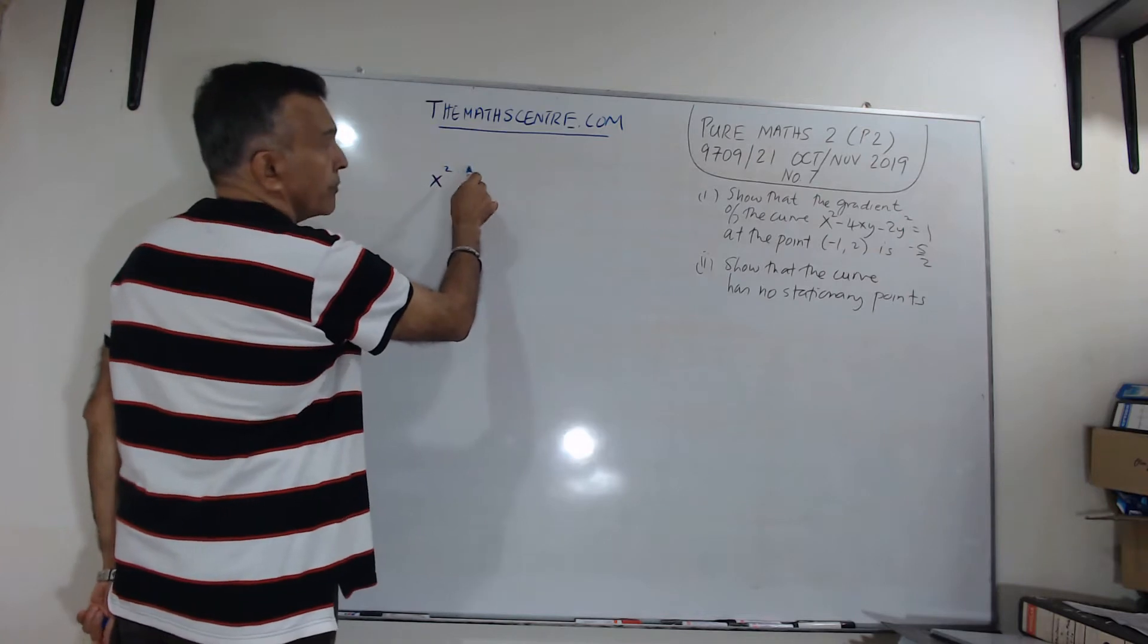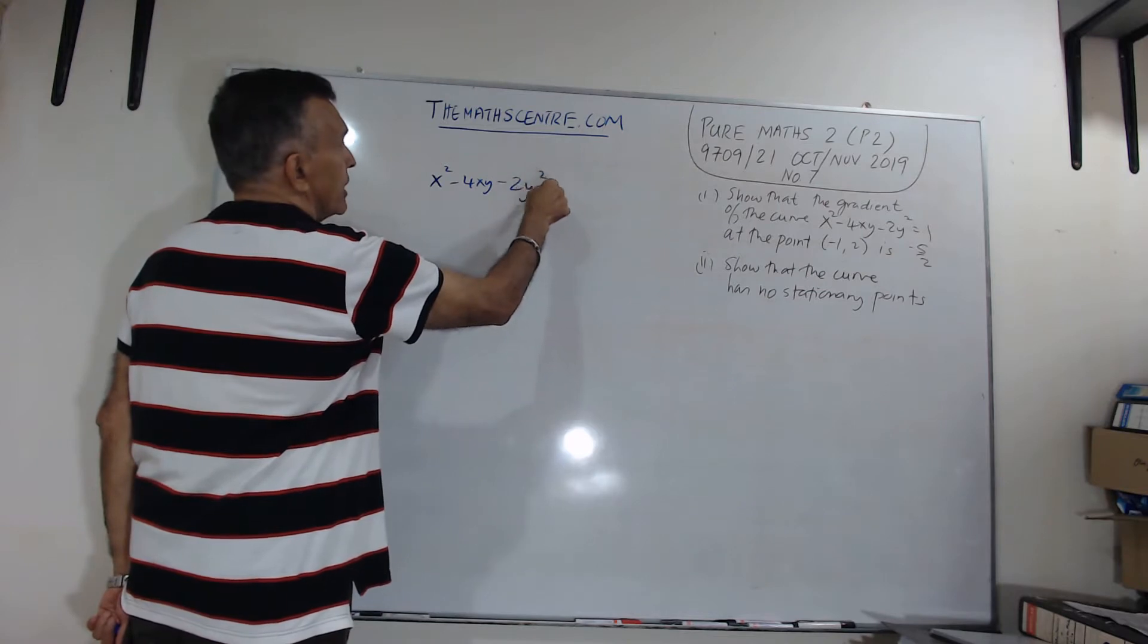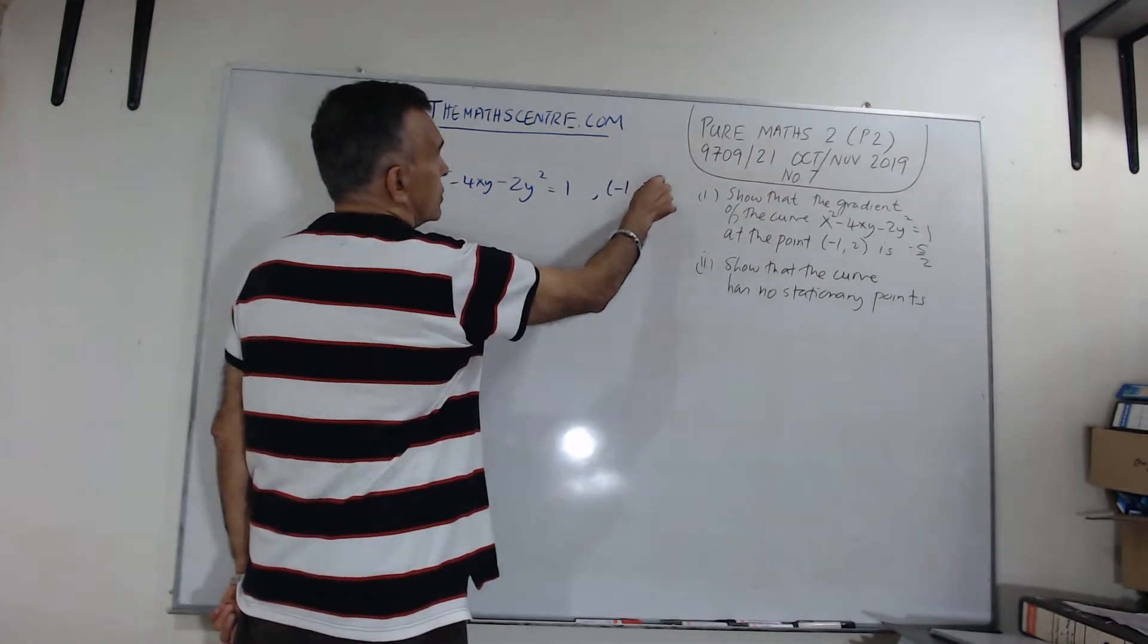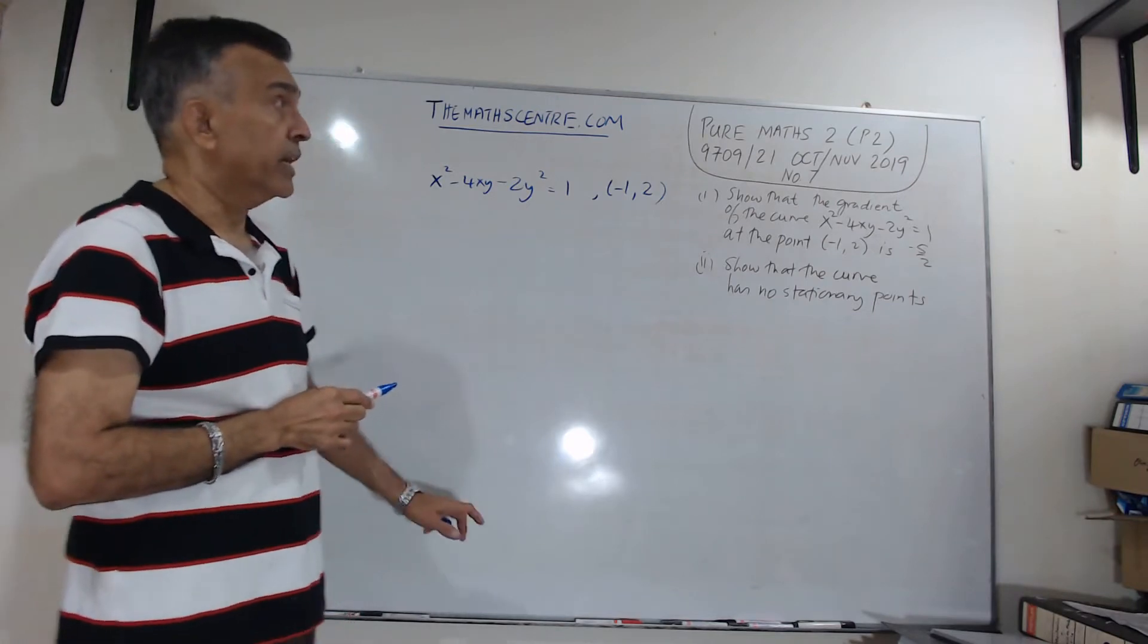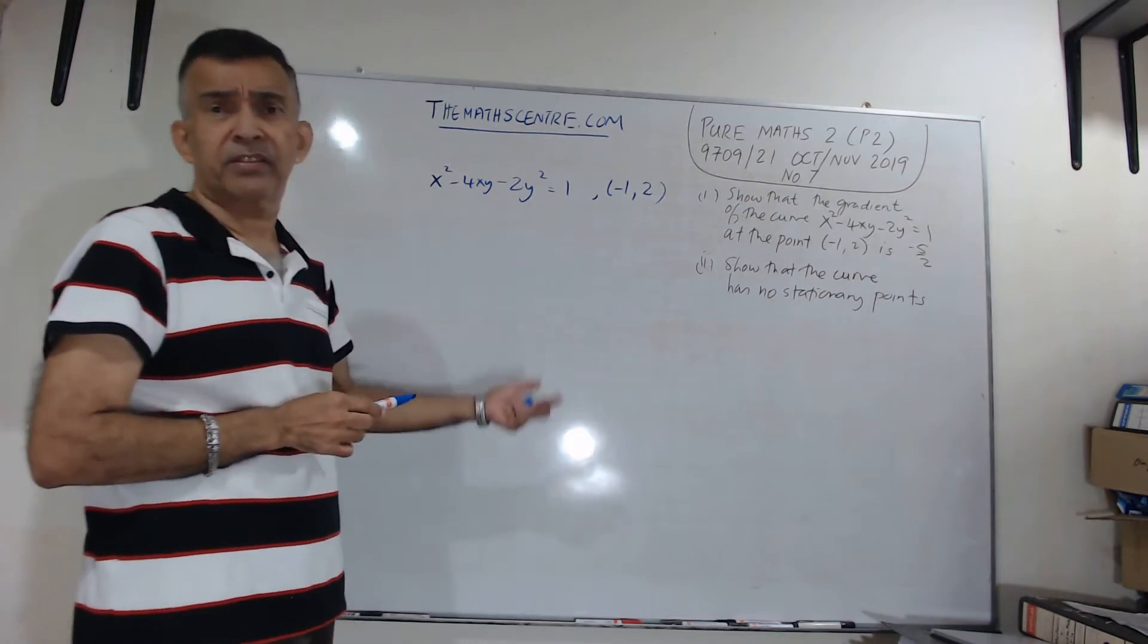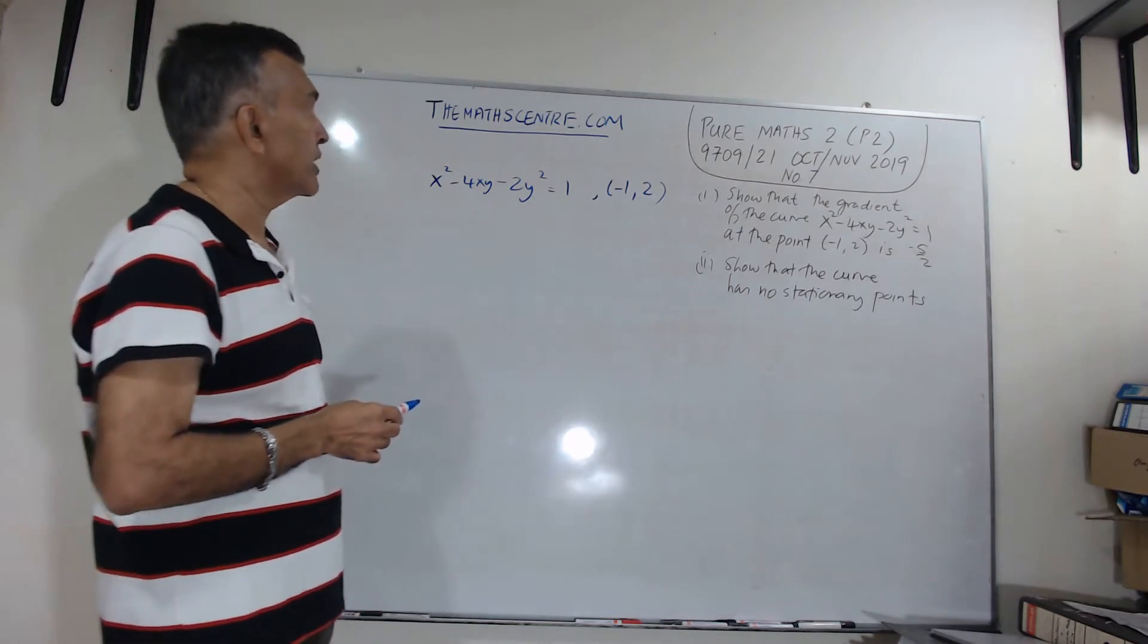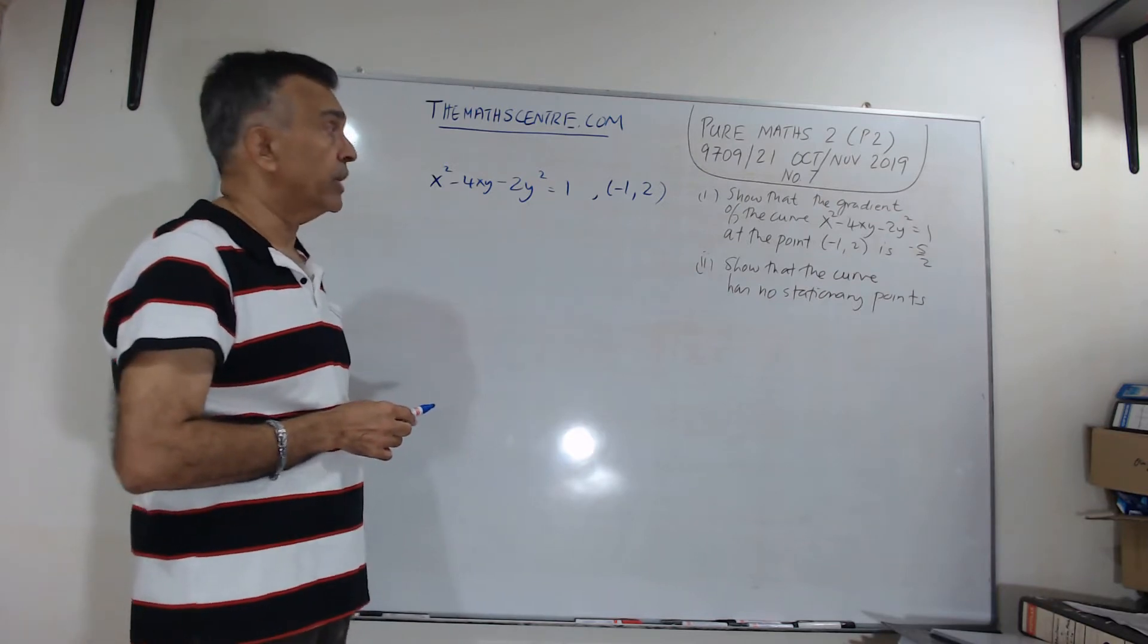We are asked to show that the gradient of the curve x² - 4xy - 2y² = 1. The gradient of this curve at the point (-1, 2), the value is given by -5/2. So again, question number 7, part 1. It asks you to show that the gradient at the point (-1, 2) is -5/2.